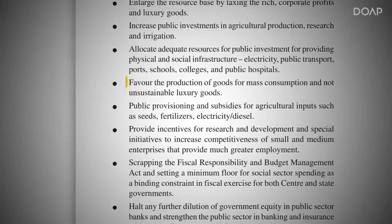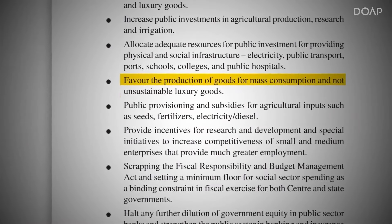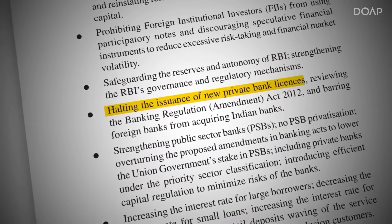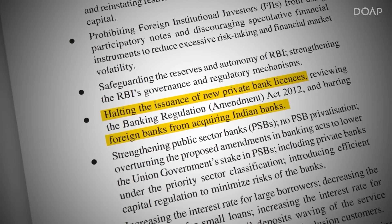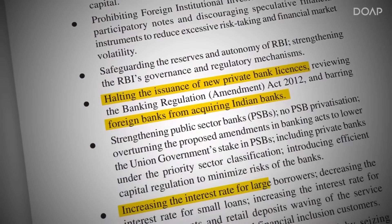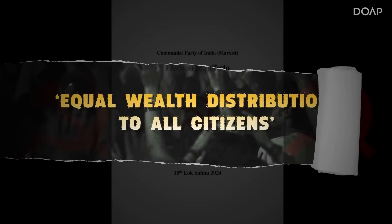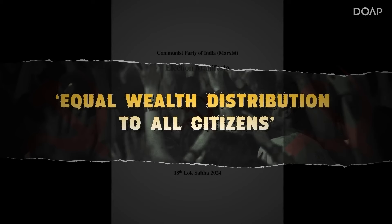Let's now talk about the next pillar: the economy. The future of any country is dependent on economic policy. If you talk about CPIM, they want to change the entire economic system of India. They propose three major policy changes: only mass production goods would get government support, not luxury goods; they will stop giving licenses to new private banks and no foreign banks can take over any Indian bank; and they would charge high interest rates from wealthy individuals and low interest rates from poorer individuals. These policies reflect the ideology of communism, which also includes equal wealth distribution to all citizens. That is why CPIM shows zero support for privatization in their manifesto.